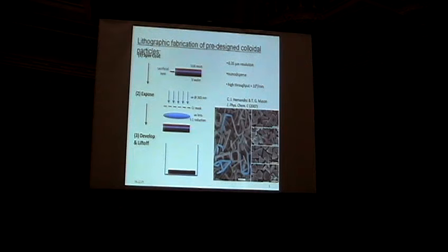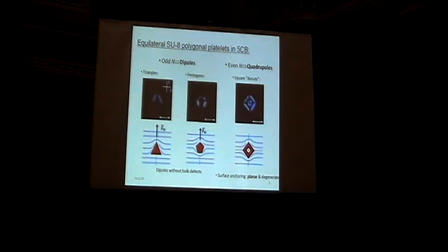And so what we're going to concentrate on are triangles, squares, these square donut things, and pentagons. And so we make the particles, we put them in 5CB, which is a thermotropic room temperature nematic.